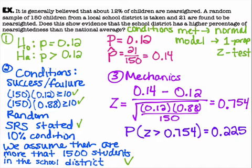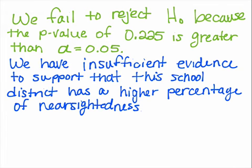Assuming alpha = 0.05, the P-value of 0.225 is high. We fail to reject the null hypothesis because the P-value of 0.225 is greater than the alpha value of 0.05. We have insufficient evidence to support that this school district has a higher percentage of nearsightedness.